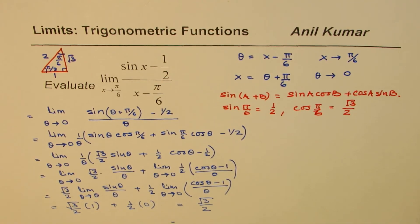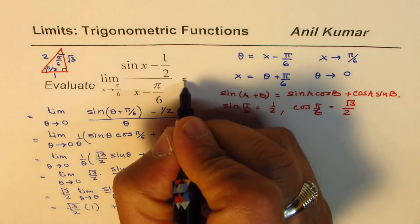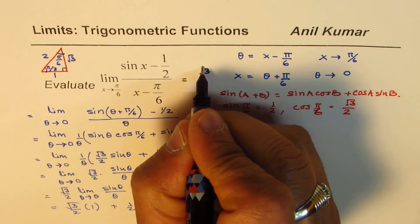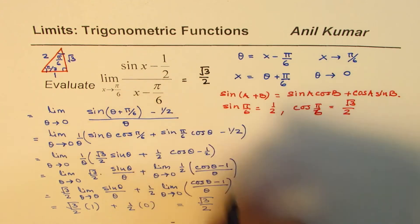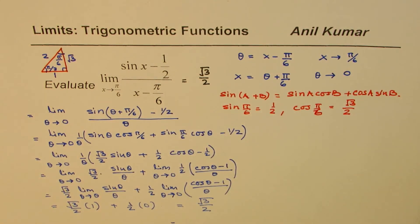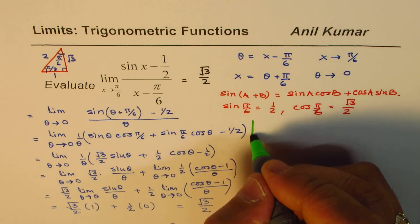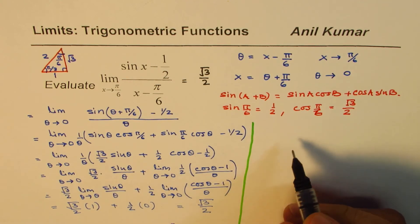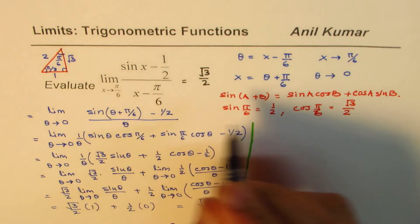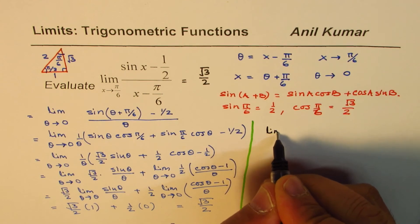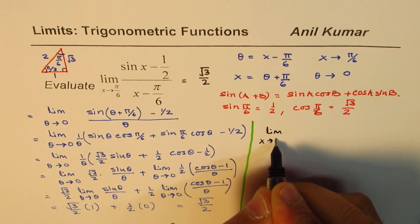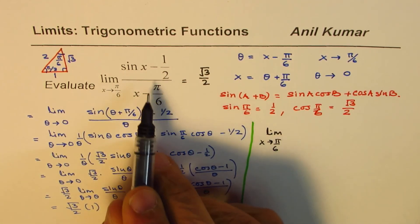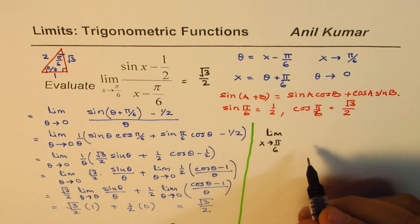So the answer to this question is √3/2. Some of you who have learned L'Hôpital's method could also find this limit using L'Hôpital's rule, since we had a 0/0 indeterminate form. We find the derivatives of both the numerator and the denominator.